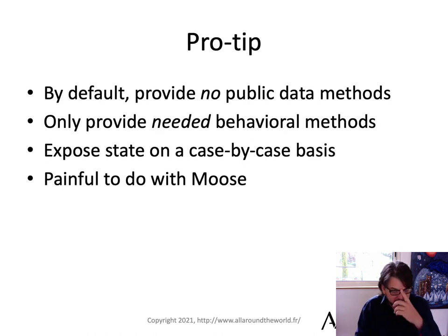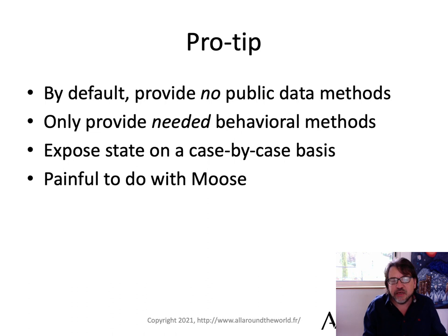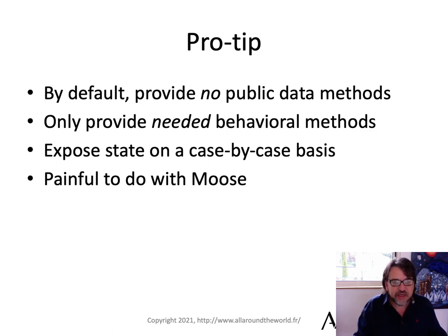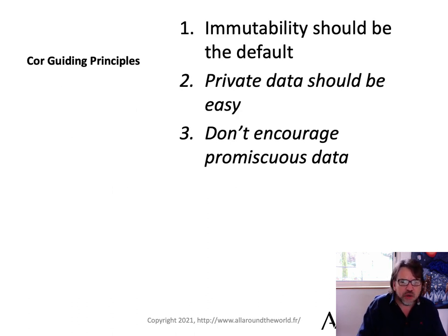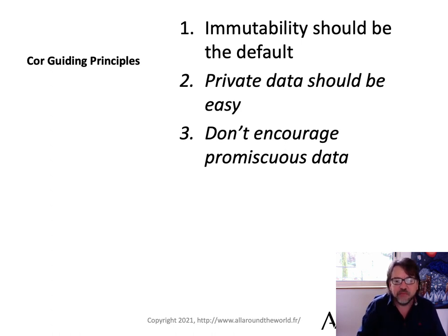When you're designing an object system, by default you don't want any public data methods whatsoever — no one can read the data you passed in. Expose them one by one as you need them, and only when you can see it's necessary inside of your code. In Moose, that's kind of painful to do. So in Cor, private data needs to be easy, and we don't want to encourage promiscuous data — don't hand that data out there and expose it to people when they don't actually need it.